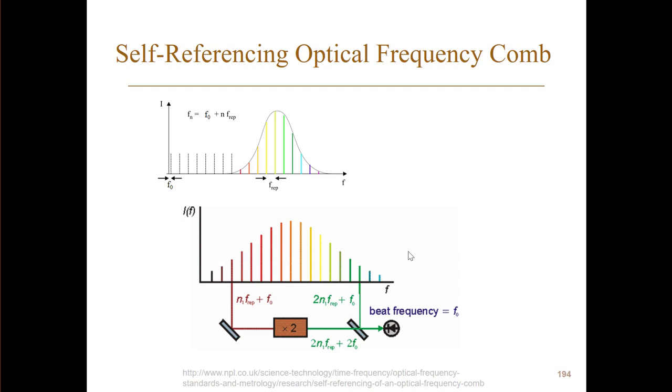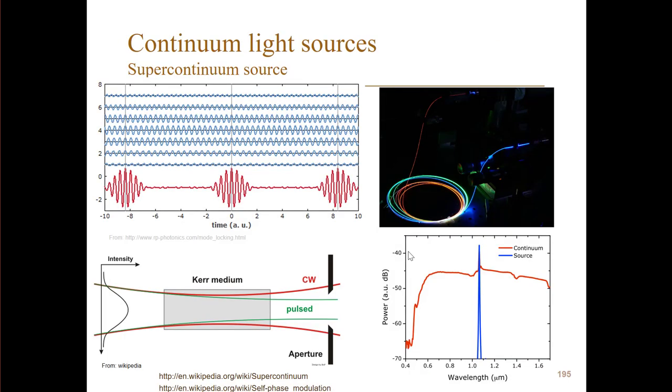Okay, so how do we broaden our frequency spectrum? We have also talked about this earlier. We can do the same trick as we did in the supercontinuum source, where we use self-phase modulation again in a fiber to broaden the spectrum. So here we have the original spectrum of a laser, and then we broaden it by sending it through this fiber where we have self-phase modulation.